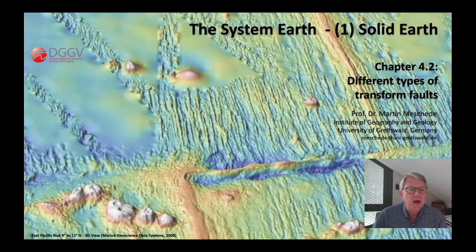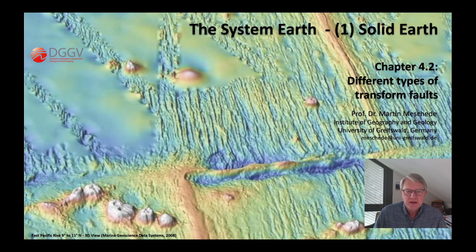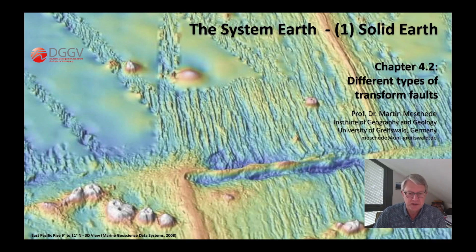Hello everyone. I welcome the viewers of another episode of my video series on the Earth System. In this video, I would like to look at different types of transform faults. There are not only those between two segments of a mid-oceanic ridge, which I discussed in detail in the previous chapter to show the principle of transform faults. There are also transform faults between different types of plate boundaries, and that is what we are talking about here.